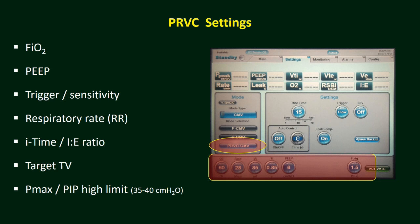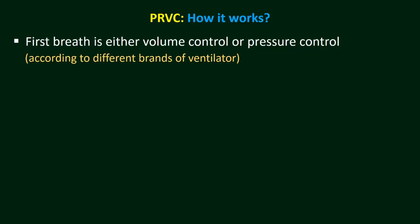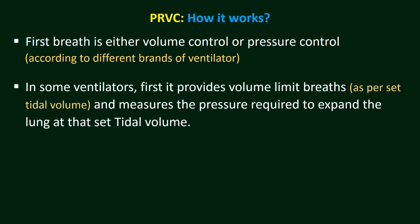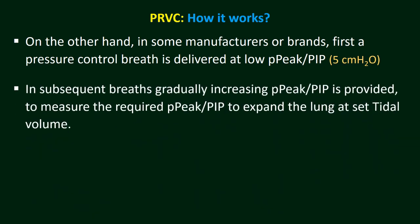In some ventilator brands, P-max or PIP high limit is not shown in the main settings screen but is available in the alarm section, where you select the appropriate PIP high limit. How it works: when mechanical ventilation starts in this mode, the first delivered breath is either volume control or pressure control depending on the brand. In some ventilators, the first breath is a volume limit breath at the set tidal volume to measure the pressure required to expand the lung. In other brands, a pressure control breath is delivered at a low PIP of 5 cmH₂O, then gradually increasing PIP to measure the required pressure for the set tidal volume.